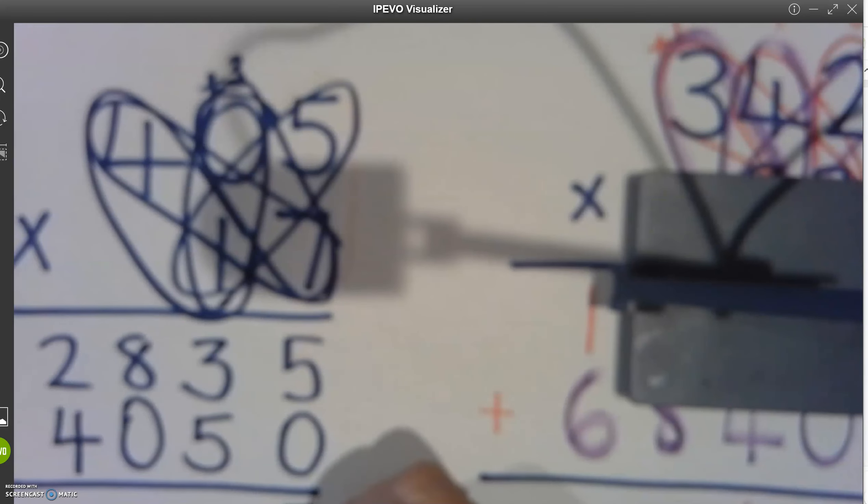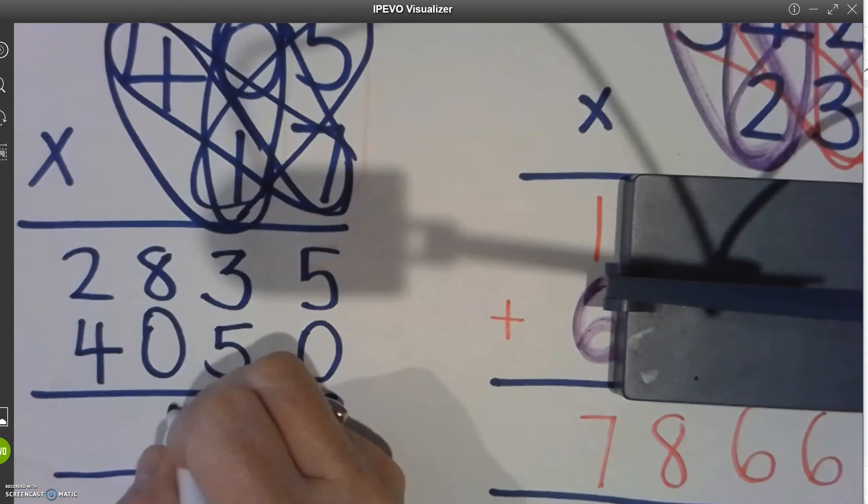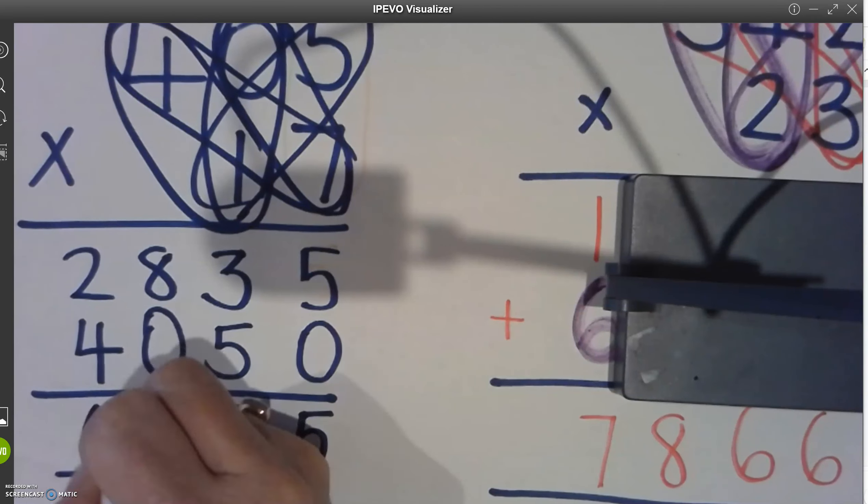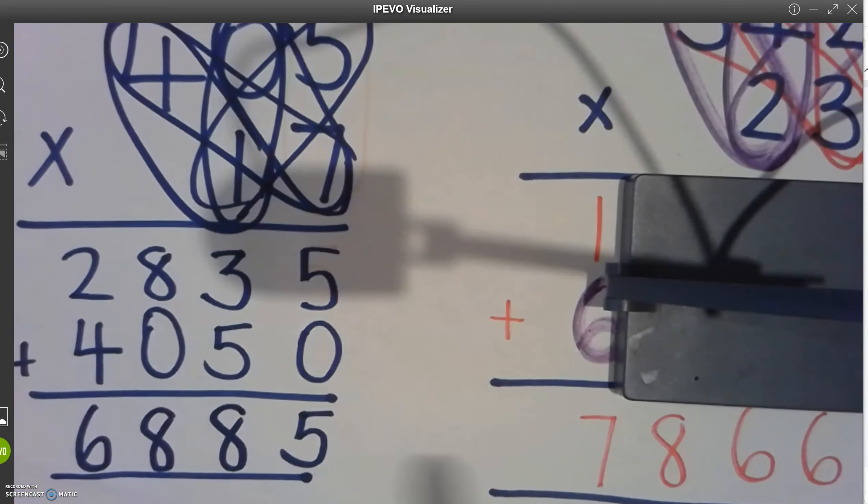Adding them together. Five. Sorry, my camera is going a little bit blurry. Eight, eight, and six. Good luck. Hope you're going well with it.